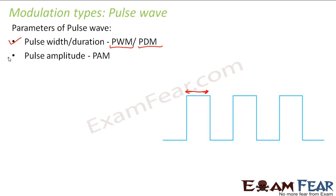The next parameter is a pulse amplitude. So pulse amplitude is this distance, this is the amplitude. So when there is a change in the amplitude, we call it as pulse amplitude modulation or PAM.